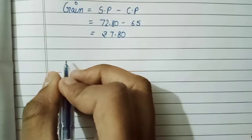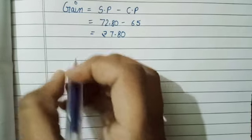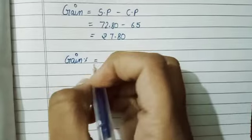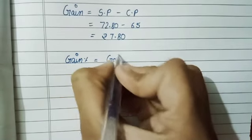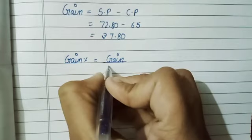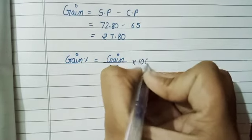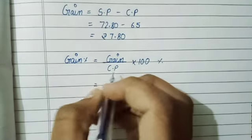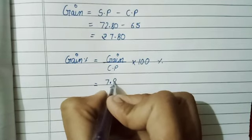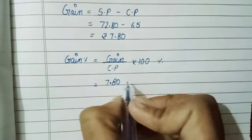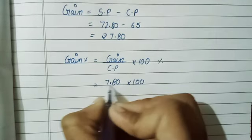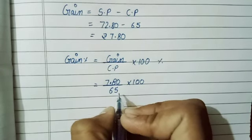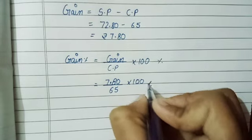This is the gain. Now we have to find the gain percentage. The formula of gain percent is: gain percent equals gain upon CP multiplied by 100 percent. Now put the values according to the formula — gain means 7.80, multiplied by 100, upon CP which is 65, percent.